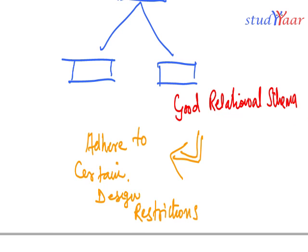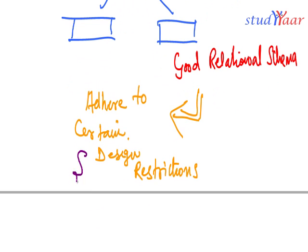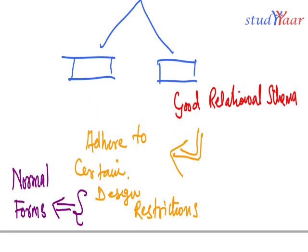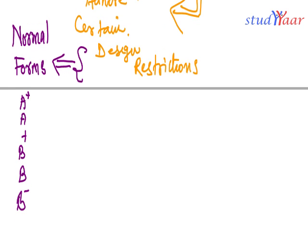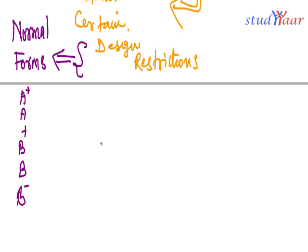I call these quality restrictions or design restrictions as normal forms. Normal forms are arranged in a hierarchy, like we have grades — a B minus grade, then a B grade, then a B plus grade, then an A grade, and an A plus grade. In the same manner, the normal forms or these design restrictions are arranged in a hierarchy.